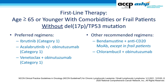For slow-go patients — age ≥65, or younger patients with comorbidities — and no-go frail patients — all without deletion 17p — the preferred regimens are the same as those covered for go-go patients: ibrutinib, acalabrutinib plus or minus obinutuzumab, or venetoclax plus obinutuzumab. Because these patients are older and frailer, FCR is not a recommended regimen. Bendamustine with an anti-CD20 antibody could be considered in slow-go but not frail patients.